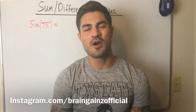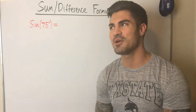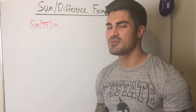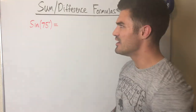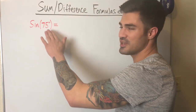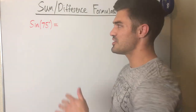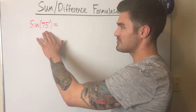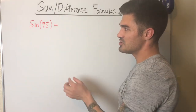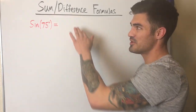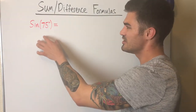Hello everybody, welcome to another video. I hope you're ready to flex those brain muscles. In this video we're going to talk about sum and difference formulas — sometimes called identities, same thing — that we can use to solve problems involving angles that are not on our unit circle, by breaking them up into two angles being added or subtracted.